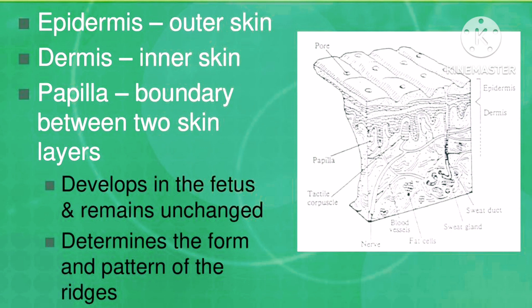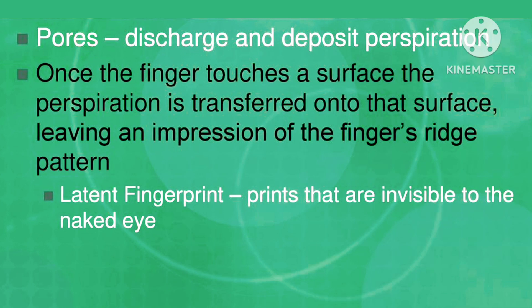The dermis is the inner skin. The papilla is the boundary between the two skin layers. It develops in the fetus and remains unchanged, determining the form and patterns of the ridges. Pores discharge and deposit perspiration.